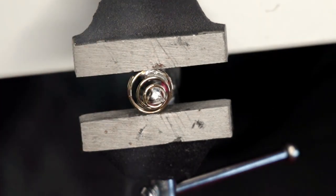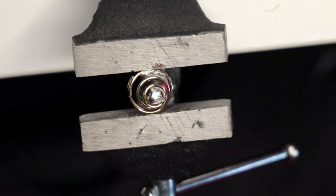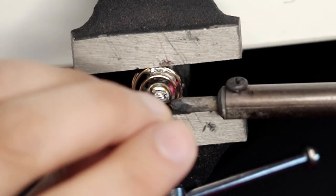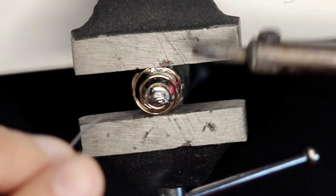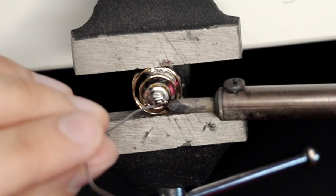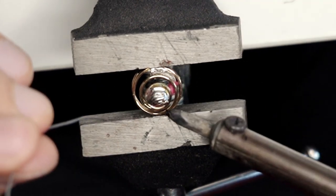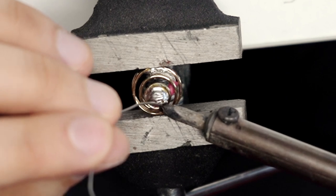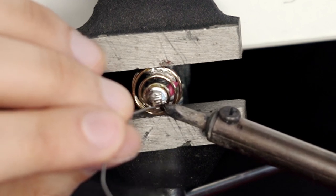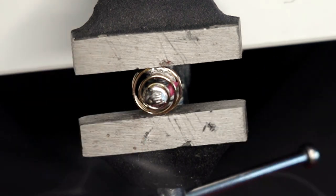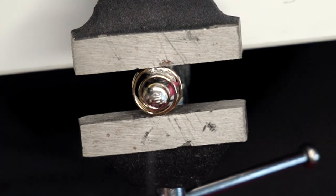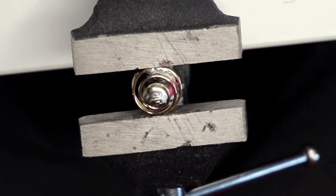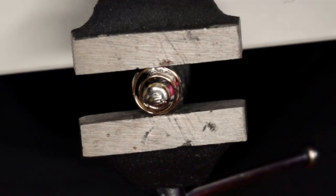And make sure once you're done with this as well that you sand that down, use a file or something to file that down. I made the mistake of not doing that and that actually caused me to damage two of my Samsung 30T cells. It dented the negative terminals. So, make sure you sand that top of the spring and the bottom of the spring so that it sits flush, no excess material hanging off. Really, really important.